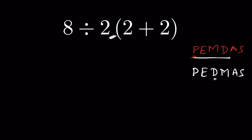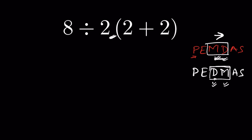Why is 16 the correct answer? It doesn't matter whether you follow PEMDAS or PEDMAS — in either rule you must stick to the left-to-right rule between multiplication and division. We do this because they have equal priority; they are reciprocal actions. Writing M before D in PEMDAS does not mean multiplication has precedence over division, or vice versa in PEDMAS. We group them together and solve left to right.